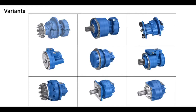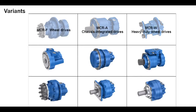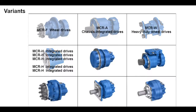The MCRF motor is the most common model and is primarily used in forklifts, road rollers, compact pavers, and elevating work platforms. MCR A motors are for driving sliding frames in pavers. MCR W motor is for higher wheel loads. MCR H motor, also called a hydro base, is for concrete mixers.